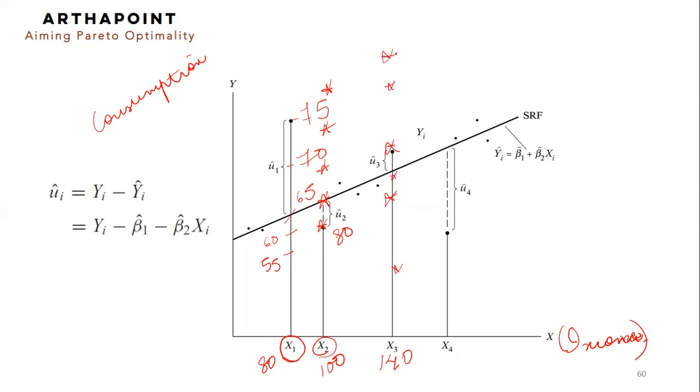What we did is that we found out the expected values of consumption for given levels of income. So this became my expected values. I joined those expected values for the sample and I got the sample regression function. Now, because the actual value of Y is either above or below the expected value of Y, let us understand what it means.